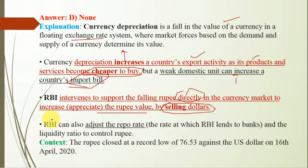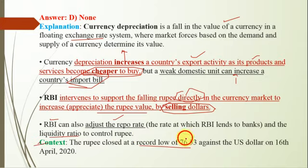Also, RBI can adjust the repo rate and liquidity ratio to control the rupee. The context is that the rupee closed at a record low of 76.53 against the US dollar on 16th April 2020.